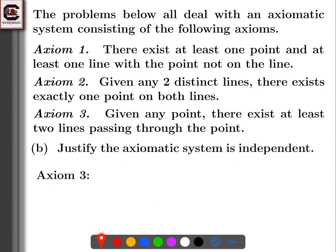Now we need a model for showing axiom three is independent — so we want axioms one and two to be true but not axiom three. This also happened earlier: we started with a line and point to make axiom one true, and axiom two was true because there weren't two distinct lines, but axiom three was not. That's why we later added two lines through the point. But that earlier picture — where axiom one and axiom two were true but not axiom three — is our model. So each of the axioms is independent of the other two, which shows the axiomatic system is independent.